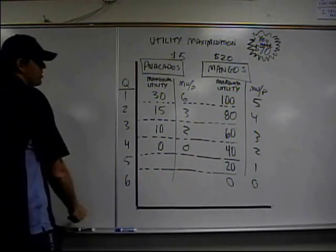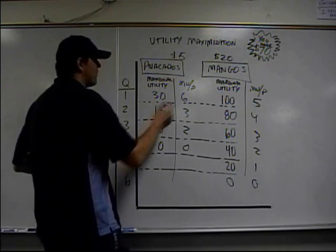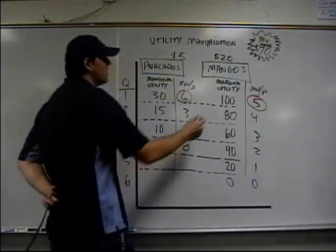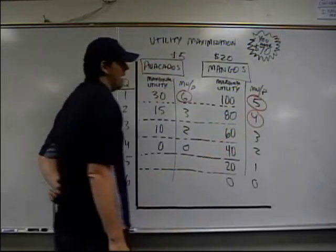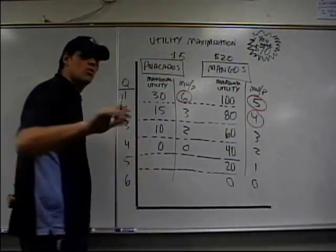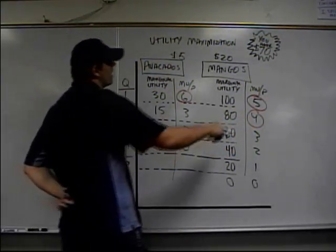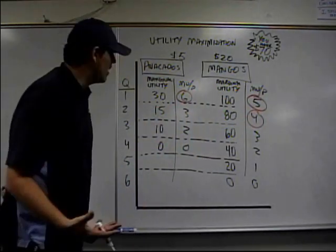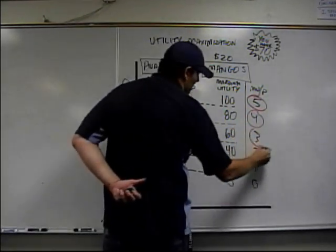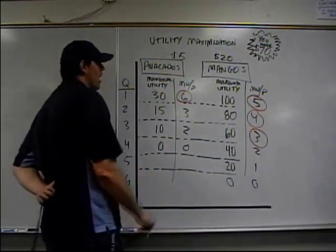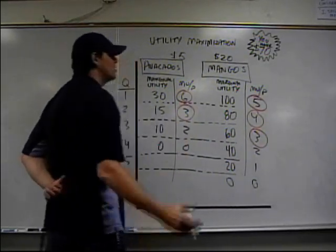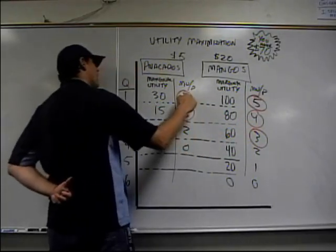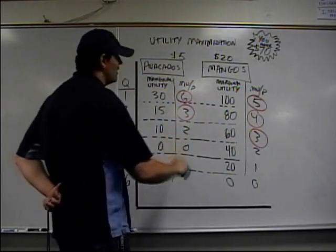Now the question is how should you spend your money? I'm definitely going to buy the first avocado, the first mango, and the second mango because it gives me the most utility per dollar spent. So far I've spent $20, $40, and then $45. I still have money to work with, so I'm going to buy this one — that's another $20 — and this one. So far I've spent $20, $40, $60, then $65, and $70.